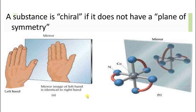A substance is chiral if it does not have a plane of symmetry. There should be no plane of symmetry and no center of symmetry. Here we mainly discuss the plane of symmetry — if there is no plane of symmetry, the substance is chiral.